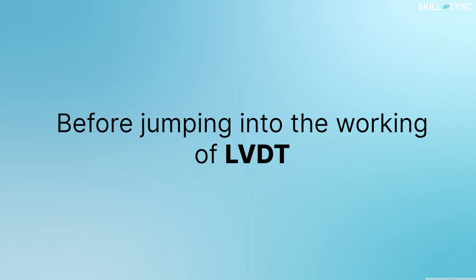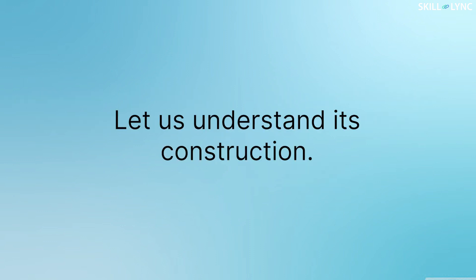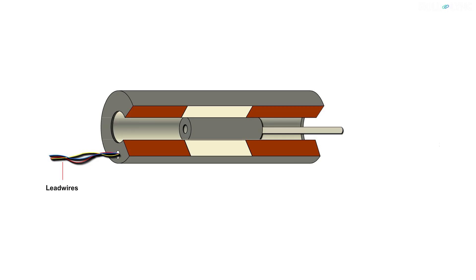Before jumping into the working of LVDT, let us understand its construction. An LVDT consists of a hollow cylinder. On this hollow cylinder, a primary coil is wound at the center. Two secondary coils having an equal number of turns are wound at equal distance from the primary coil on the cylinder. Through the center of the cylinder, a magnet is held with the help of a long non-ferromagnetic shaft or push rod which is allowed to move freely inside the cylinder.